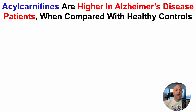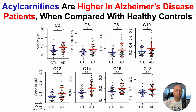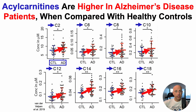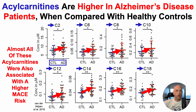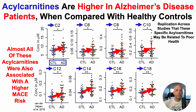Acylcarnitines are also higher in Alzheimer's disease patients when compared with healthy controls. We've got eight different acylcarnitines, with data in controls and Alzheimer's disease patients. For each of these circulating plasma acylcarnitines, each was significantly higher in the AD patients compared with healthy controls. Note that almost all of these acylcarnitines were also associated with having a higher MACE risk, with the exception of C18 acylcarnitine, suggesting that replication across studies indicates these specific acylcarnitines may be related to poor health.